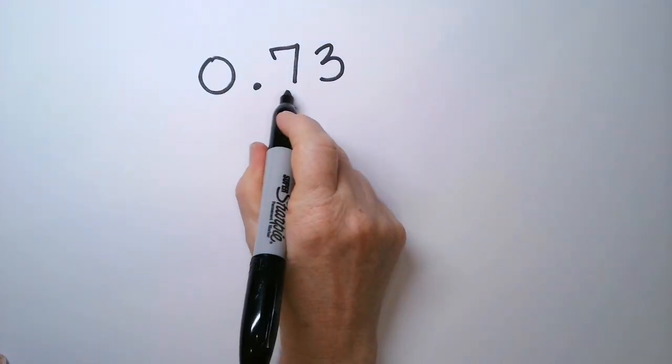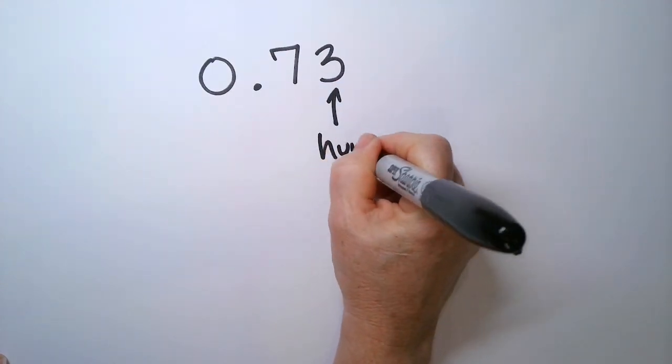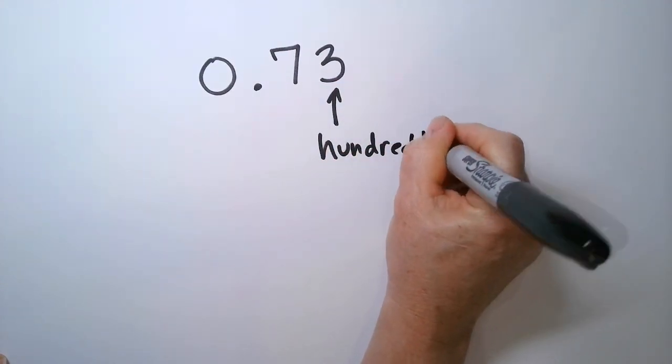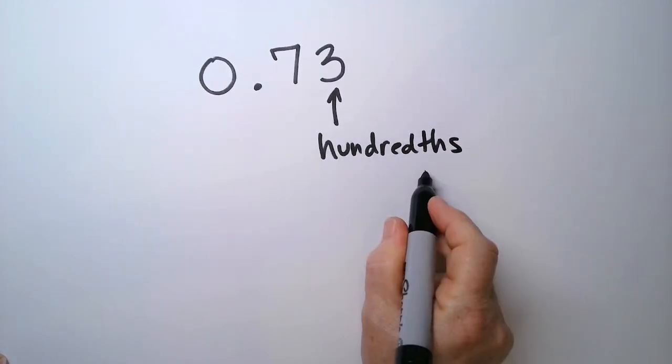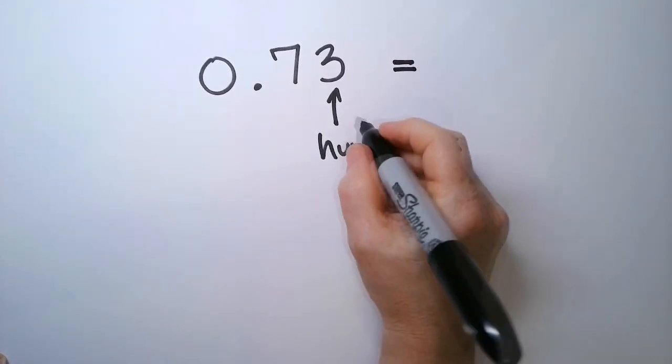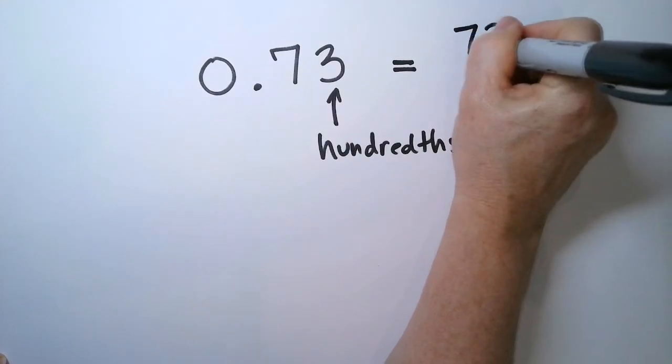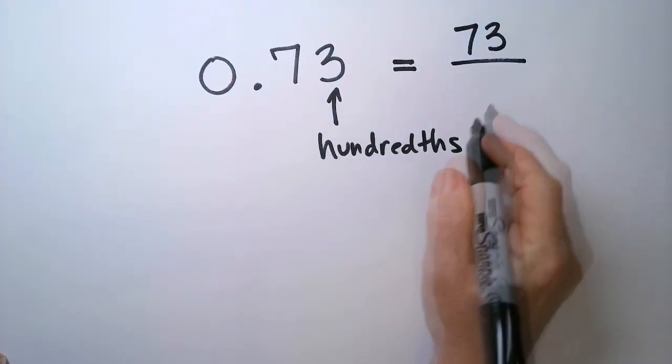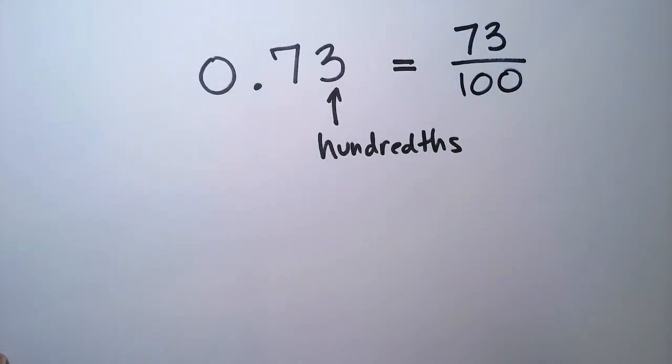This number is 73 hundredths. So this is now the hundredths place, which tells you what needs to go on the bottom. So you just write 73 on top and then hundredths or hundred is on the bottom. I told you you'd get it quick.